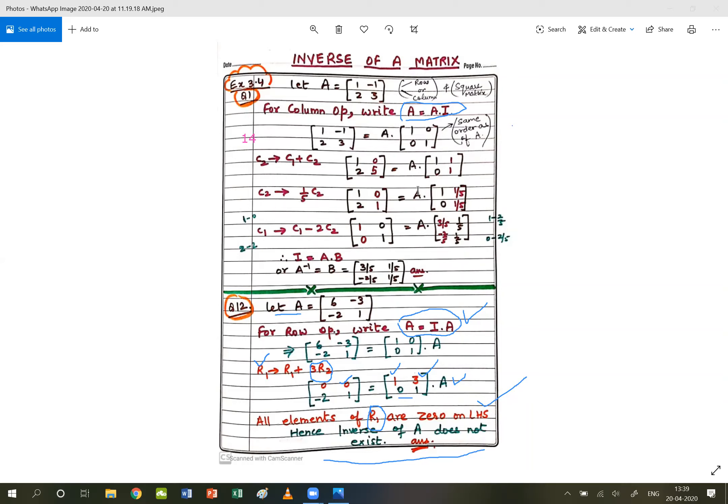These 12 and 14 questions I have shown you, in two different methods: one has column operations and one has row operations. So this way you will have 12 questions, and after that there are some questions which are three by three order and we will do in the next class. Okay children, so you practice and if you have any difficulty please tell me. See you in the next class.